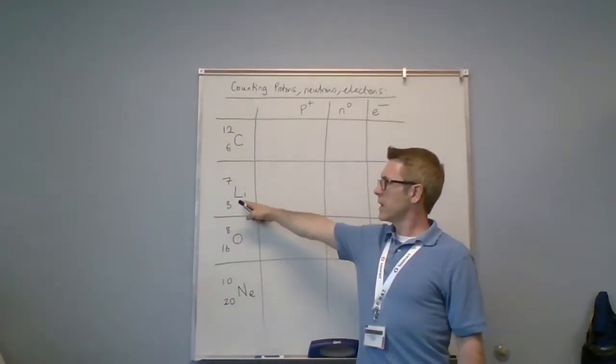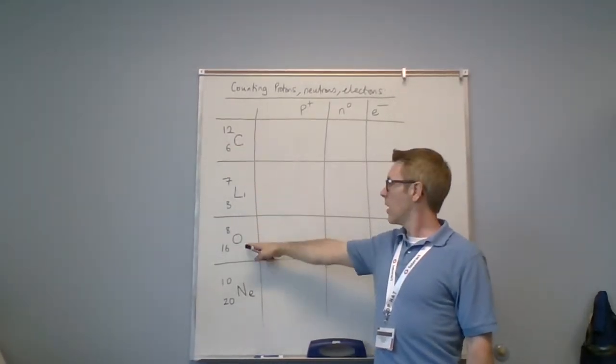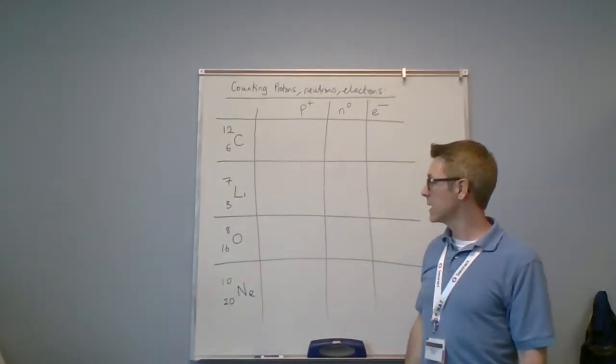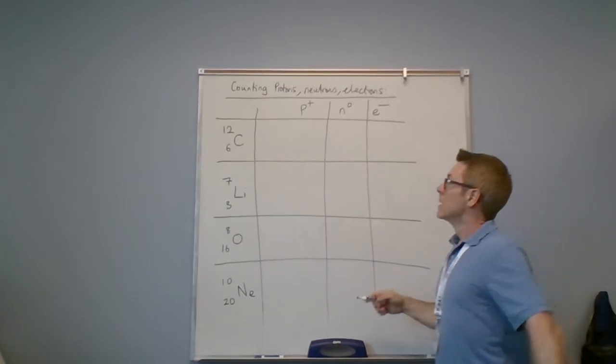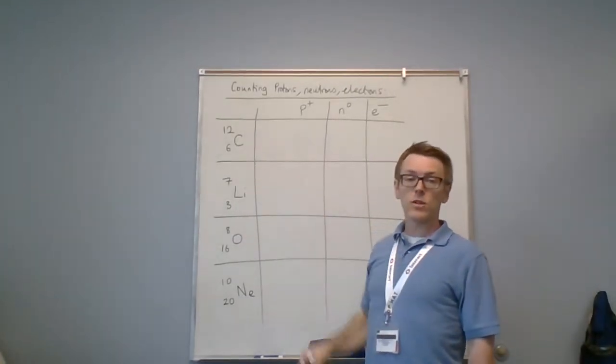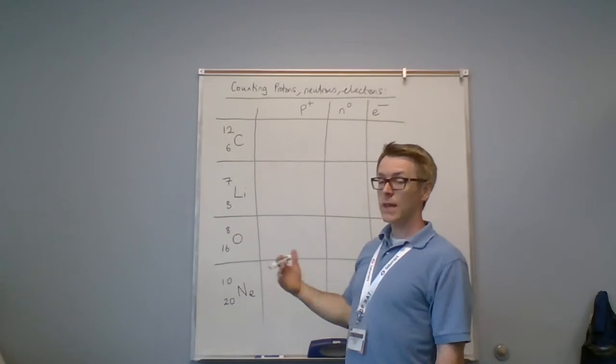Lithium with the numbers 7 and 3, oxygen with the numbers 8 and 16, neon with the numbers 10 and 20. I have to identify which is A and which is Z. I know that A is always larger than Z, so I know on this occasion 12 is A and 6 is Z.